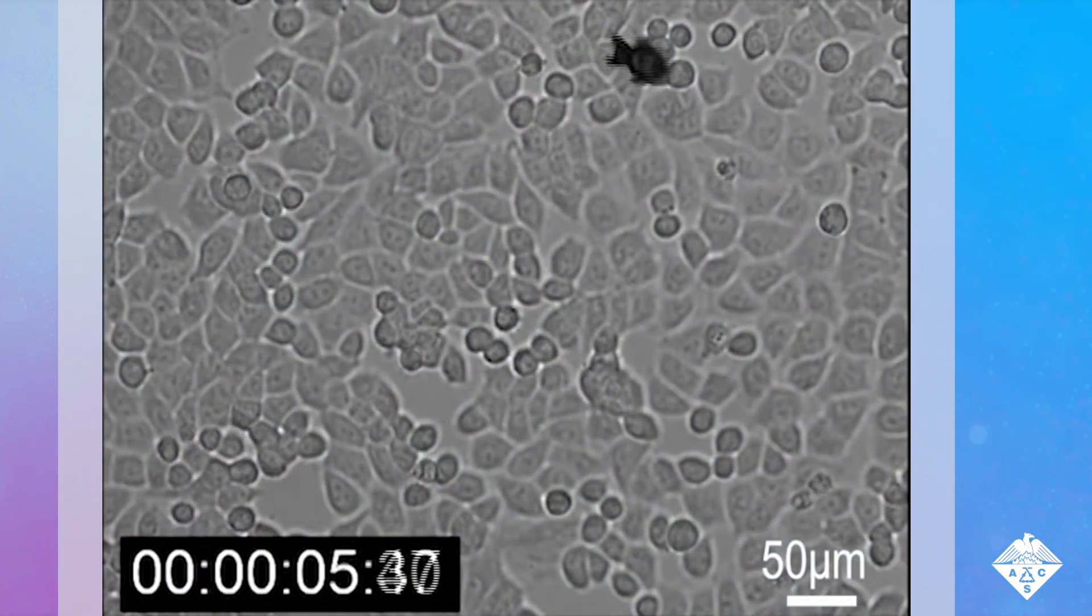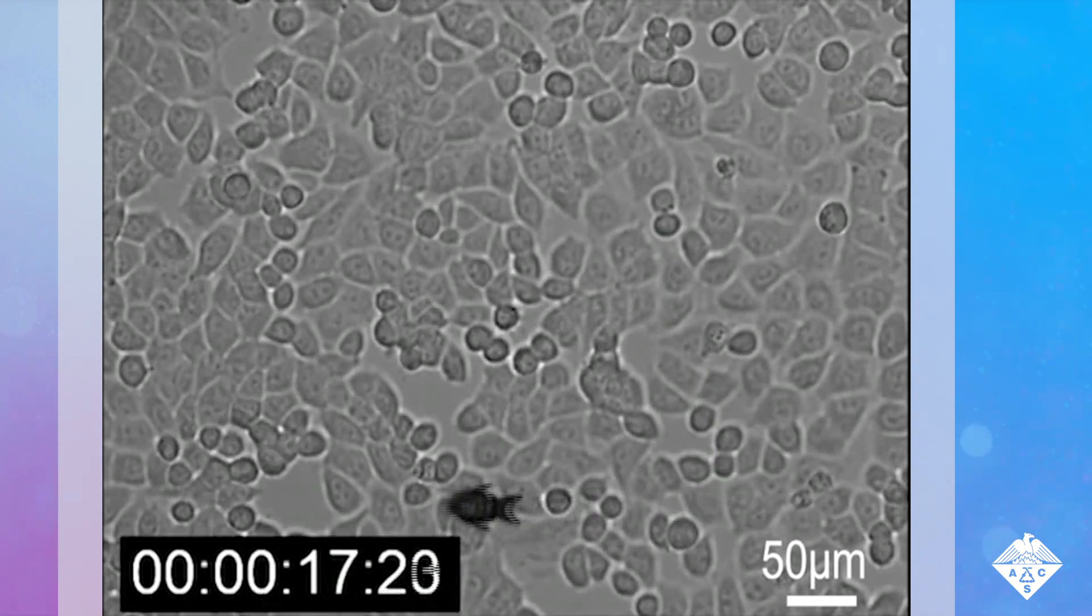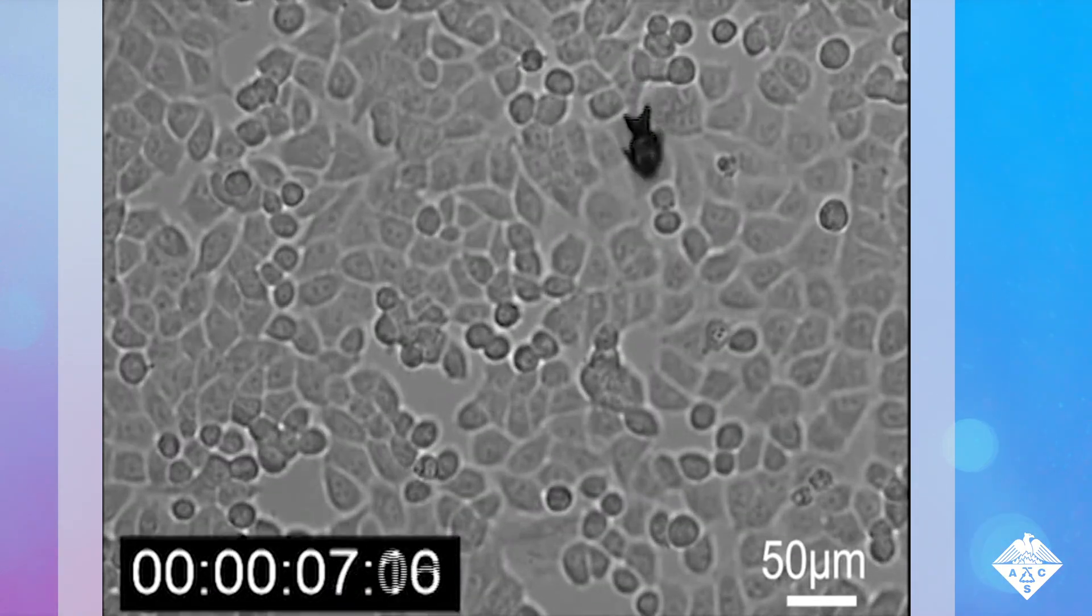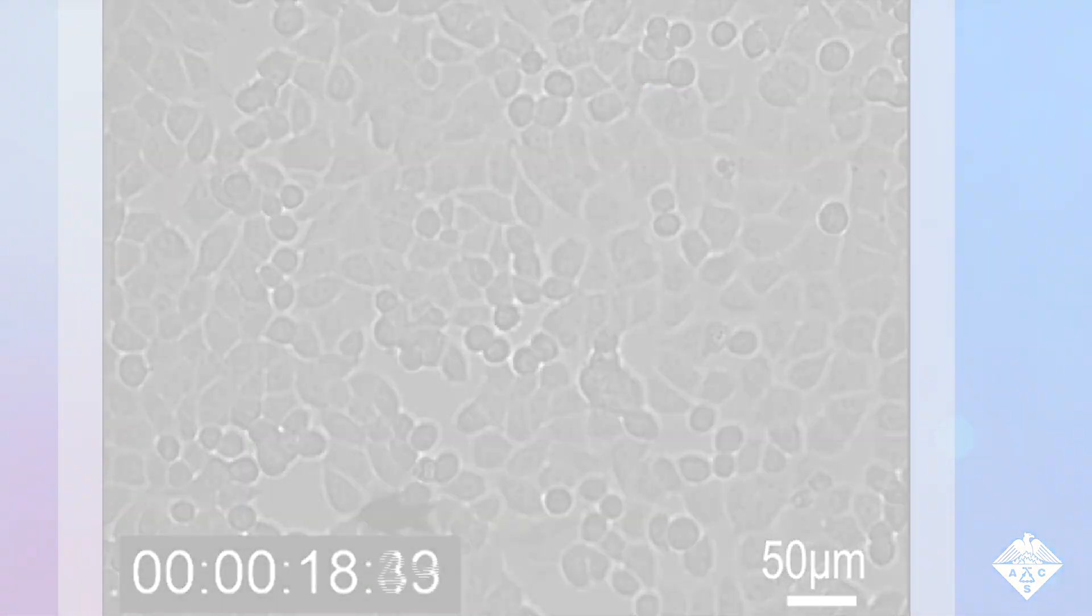The researchers say that before the micro-robots can be used for cancer treatment, they need to be made even smaller to navigate real blood vessels, and a suitable imaging method must be identified to track their movements in the body.